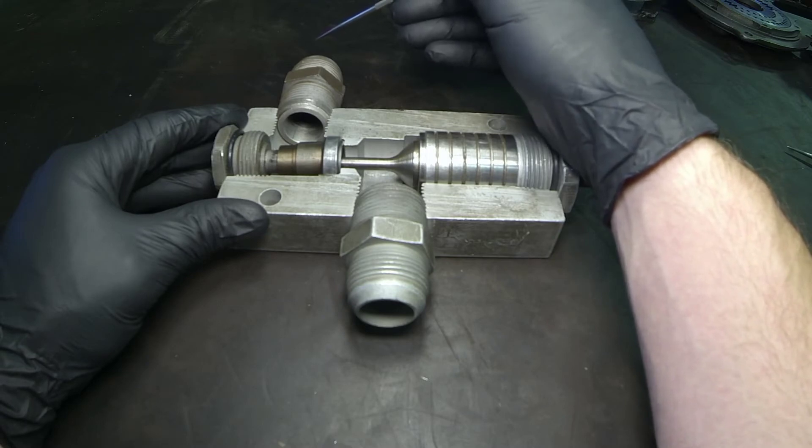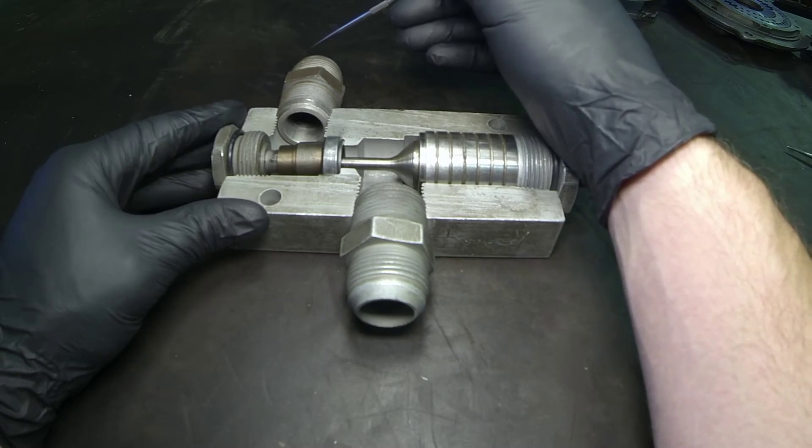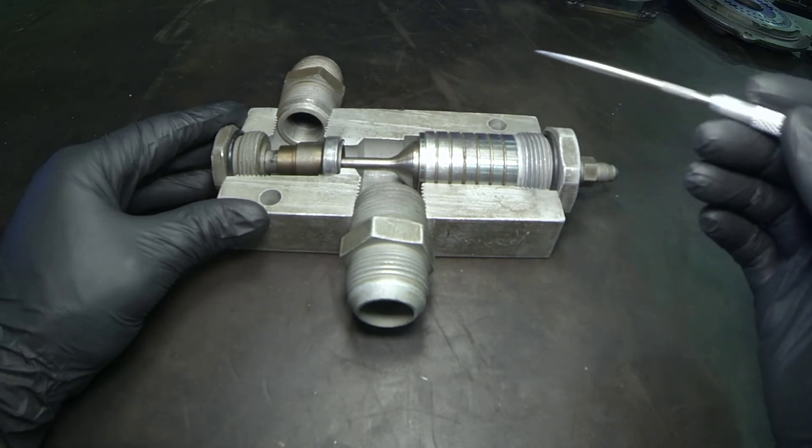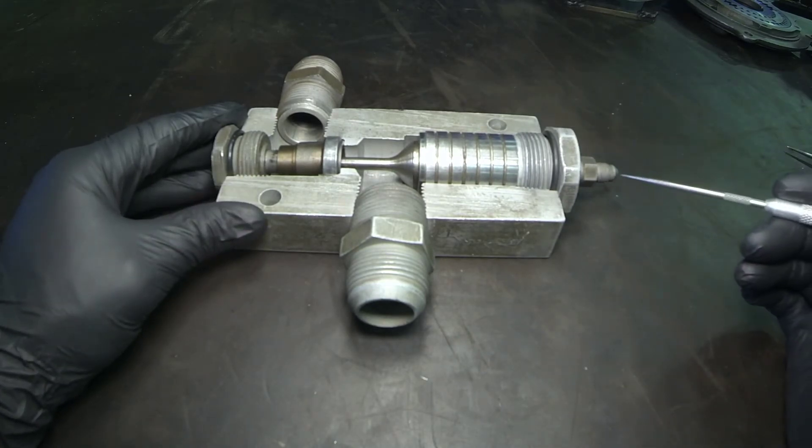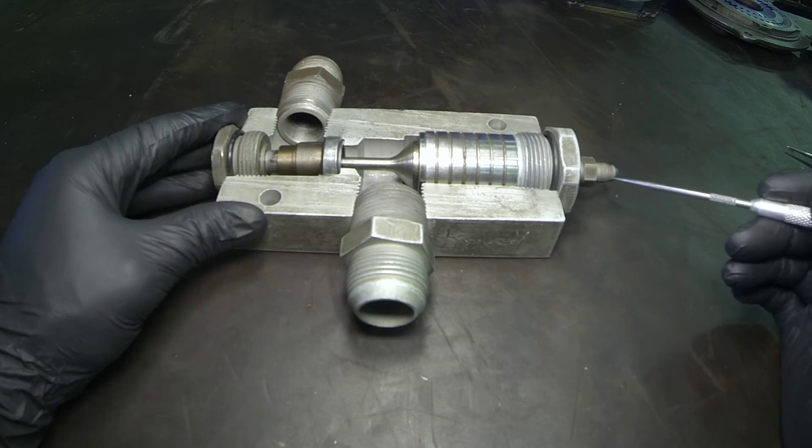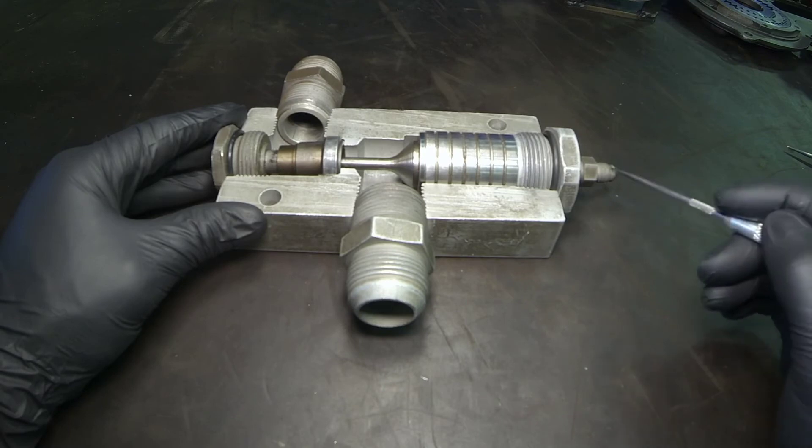When we do want to retract the cylinder, the oil coming from port B that would be used to retract goes to two places. One, it goes to the rod end of the cylinder. Two, we'd have a small signal line that comes to this little fitting on the top end here.